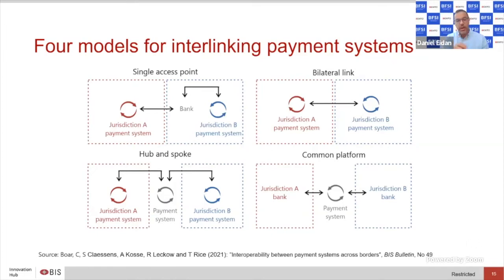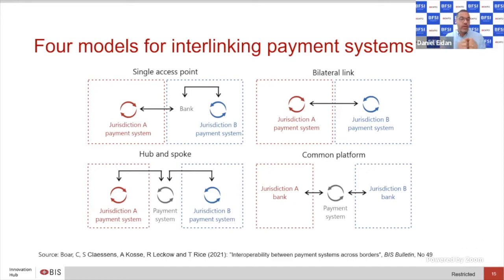This brings us to two models on the bottom. The hub-and-spoke model has a payment system in jurisdiction A, a payment system in jurisdiction B, and a hub payment system in the middle that can consume and push funds out into these different payment systems.